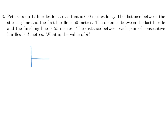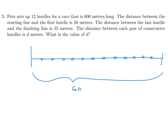We've got 12 hurdles — let me fit them in: 1, 2, 3, 4, 5, 6, 7, 8, 9, 10, 11, 12. The whole distance is 600 meters. The distance from the starting line to the first hurdle is 50, the distance from the last hurdle to the finish line is 55, and between each pair of consecutive hurdles is d. The most important thing is to set this up properly.